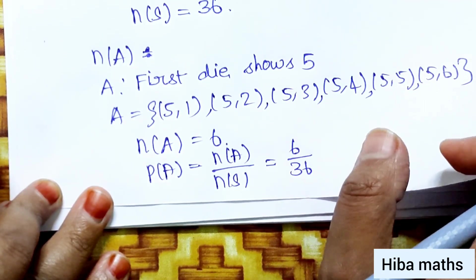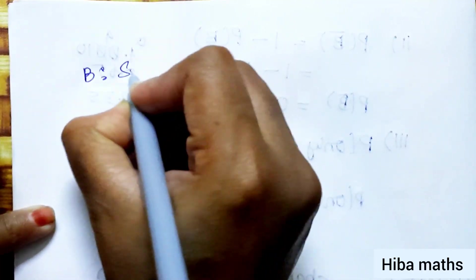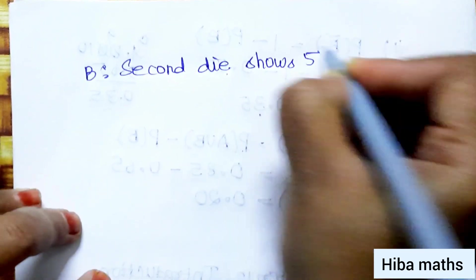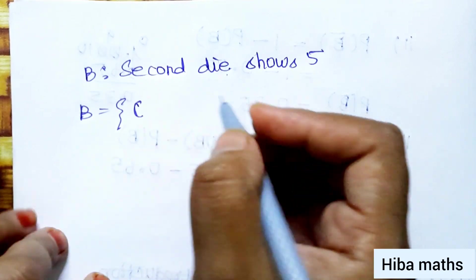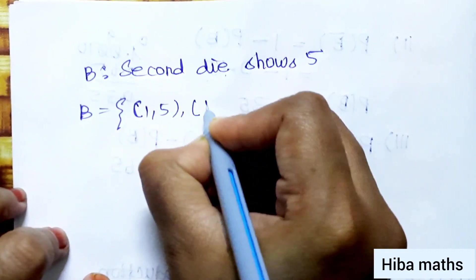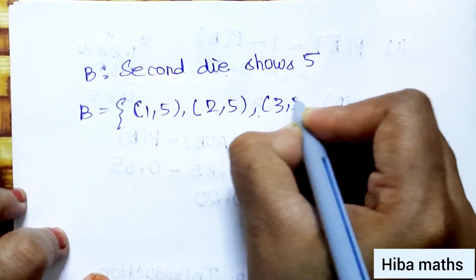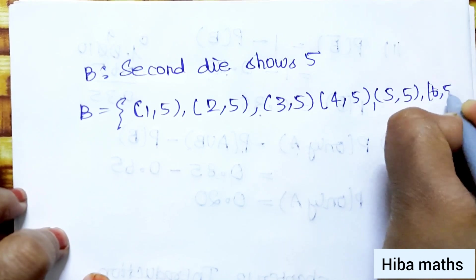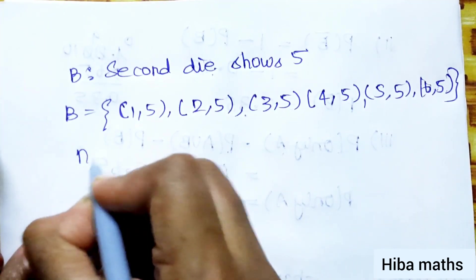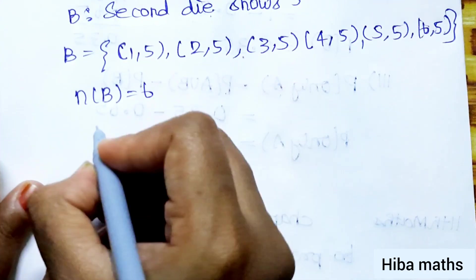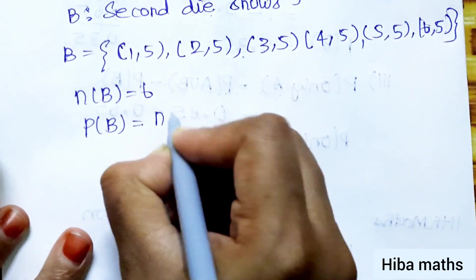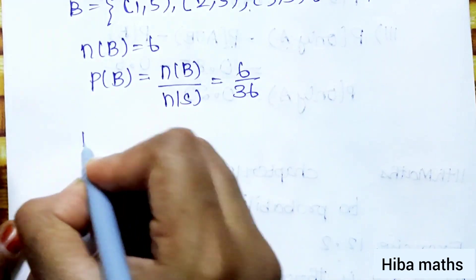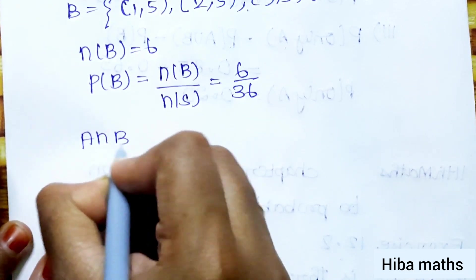Now for event B: the second die shows 5. The outcomes are 1,5; 2,5; 3,5; 4,5; 5,5; 6,5. So N of B is equal to 6. P of B equals N of B by N of S, that is 6 by 36.